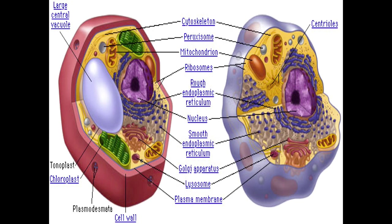This is a good picture of the cells that you should know. The one on the left is a plant cell — we can tell because it has a cell wall, a vacuole, and a chloroplast. On the right we know it's an animal cell because there's no cell wall, no chloroplast, and no large vacuole.